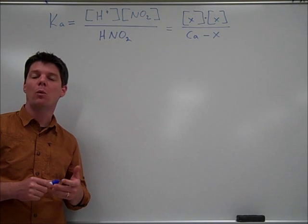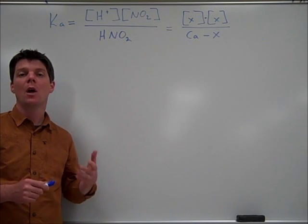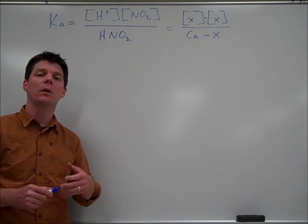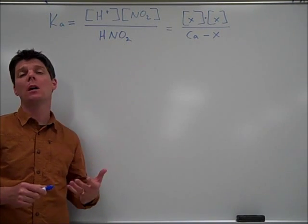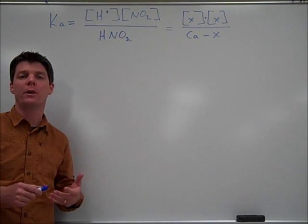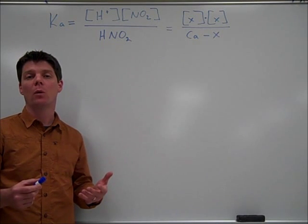To calculate the pH for a weak acid such as nitrous acid, we'll need to use the Ka value. This is necessary because we can no longer make the assumption that the acid is going to completely dissociate in water.